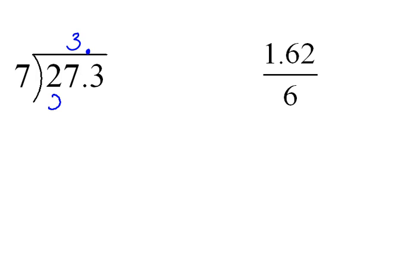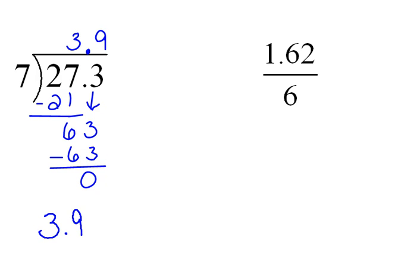3 times 7 would be 21. When we do the subtraction, 27 minus 21 would be 6. And then we drop our next digit and begin again. 7 will go into 63 nine times. 9 times 7 is 63. So our answer here would be 3.9.